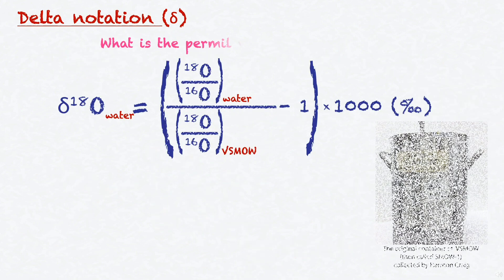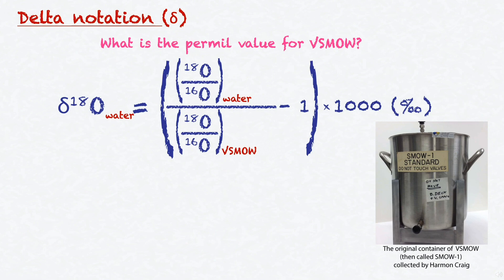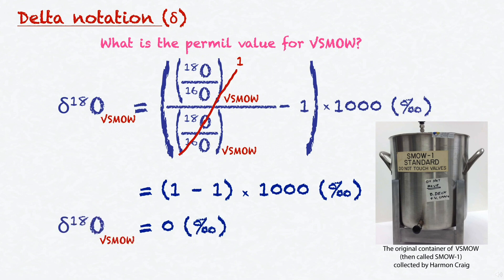So, what would the delta per mil value for VSMOW be? Let's plug that into the equation. If we want to know the VSMOW delta per mil value, this means that VSMOW is our sample. But, it is also our reference, since VSMOW is a water sample. Therefore, the ratio of these ratios is 1, since they are equal. 1 minus 1 is 0. Thus, the VSMOW delta per mil value is always 0 per mil. This is also true for any other reference we might be working with for other materials.